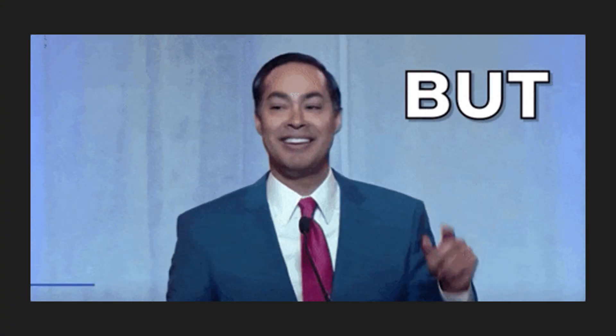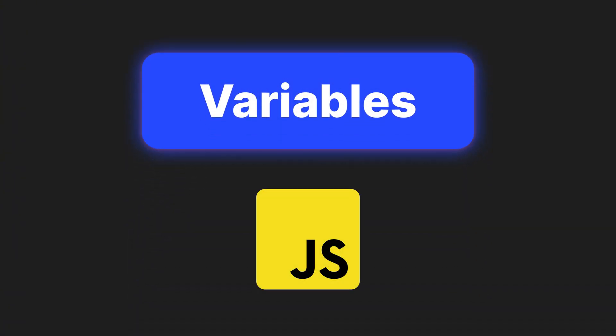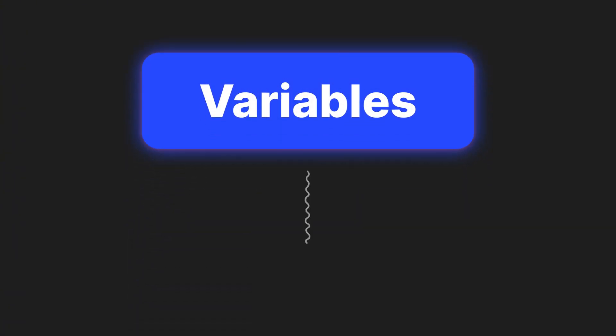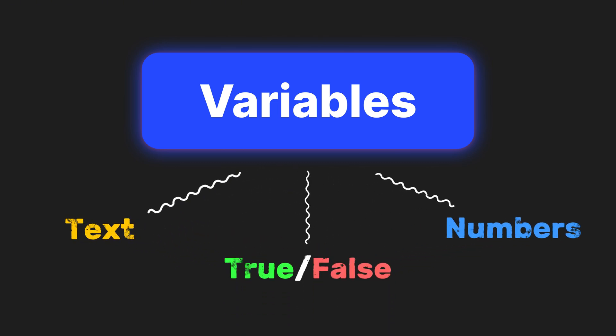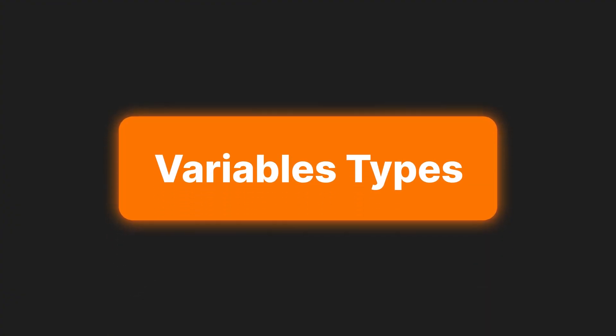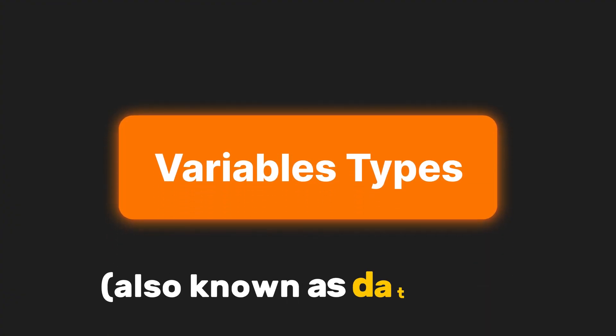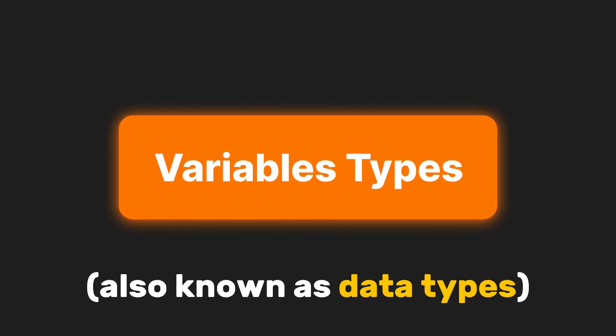But here's the cool part — variables in JavaScript don't just store text. They can hold numbers, true/false values, and more. That's why we have something called variable types, also known as data types.